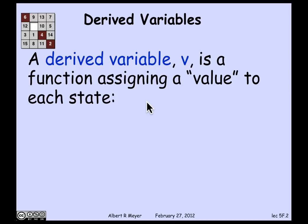A derived variable is simply a function on the states of a state machine that assigns some value to the states. It's just that kind of function mapping.